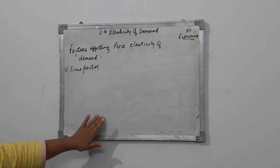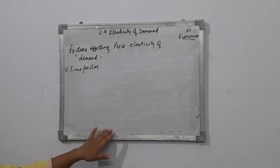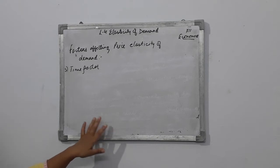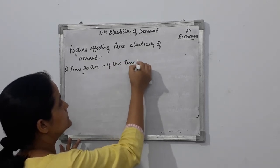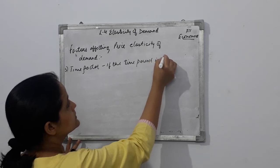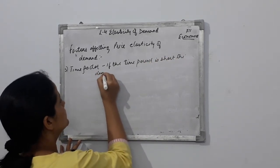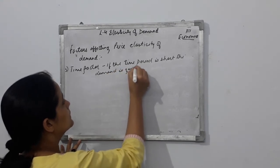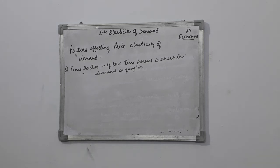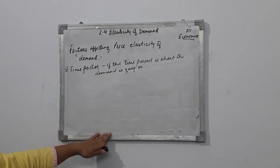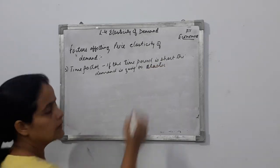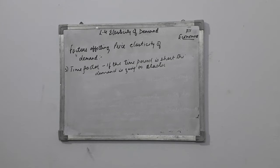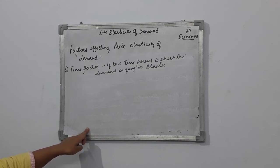The fifth factor is the time factor. Price elasticity is generally lower for a short period of time. If the time period is short, the demand tends to be inelastic because consumers don't have enough time to find alternatives or adjust their behavior. If the time period is long, the demand tends to be elastic because consumers have more choices and time to adjust.